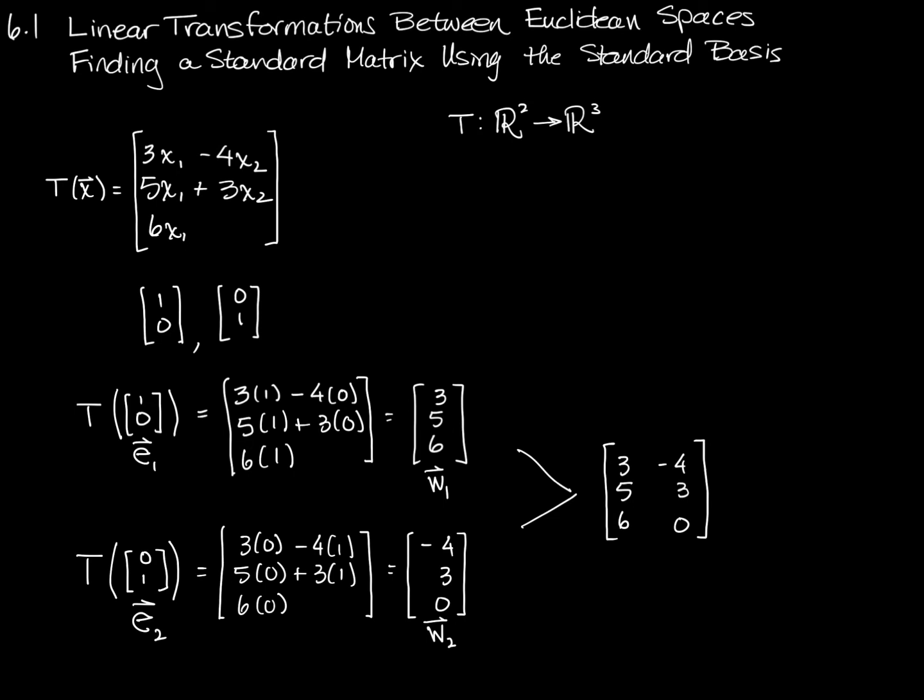Once I have it, of course, I can use that standard matrix in the same way as I did before to find the transformation of a different vector. Let's go with [3, -2]. The transformation of [3, -2] is going to be equal to, how did I get blue there? That was weird.